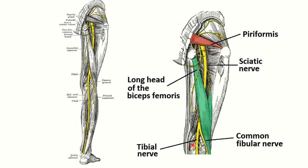Let's review the sciatic nerve. Here we can see the sciatic nerve, and the sarcoma was located in the hip area. During the sarcoma excision, the sciatic nerve is sacrificed — that means divided and lost. So let's go through the anatomy of this sciatic nerve.